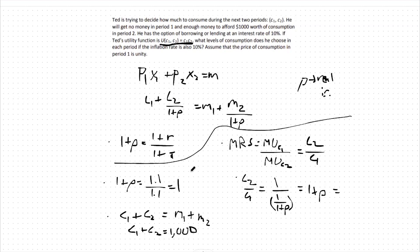In this case, 1 plus rho we found to be 1, so c2 over c1 equals 1. This means c2 equals c1.